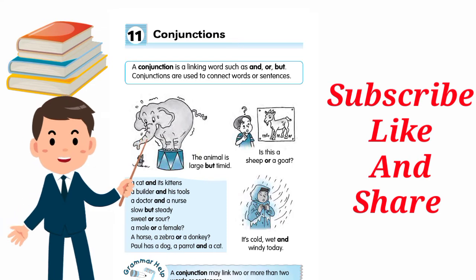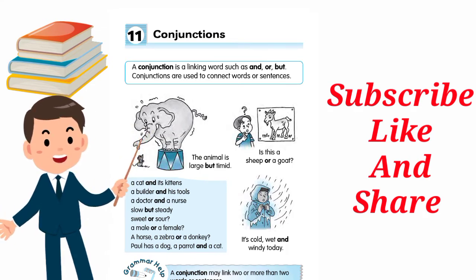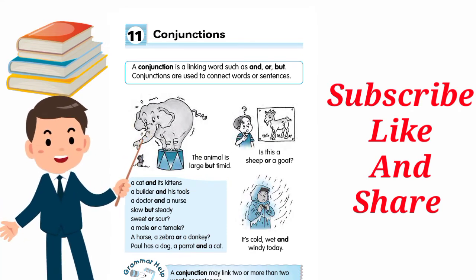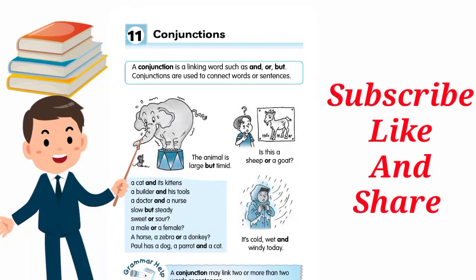Slow but steady. Sour or sweet. A male or a female. A horse, a zebra, and a donkey.